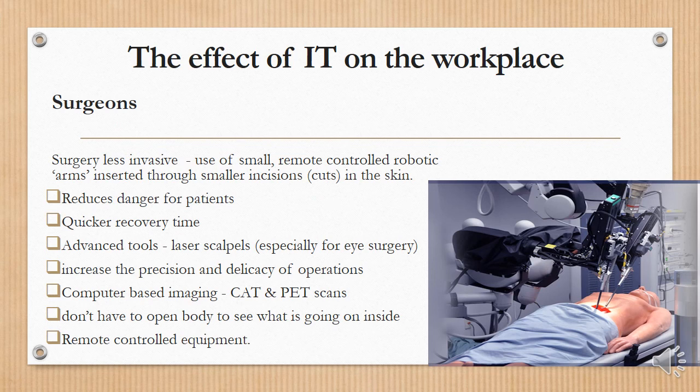For surgeons these days, they can do less invasive surgery. Small robotic arms will go into tiny holes — keyhole surgery — where the doctor only needs to control the arm. It reduces danger for patients and there's a quicker recovery time because the incisions made are not as big. There are laser scalpels that are far more precise, computer-based imaging like CAT scans and PET scans, and a lot of remote-controlled equipment used inside the body.